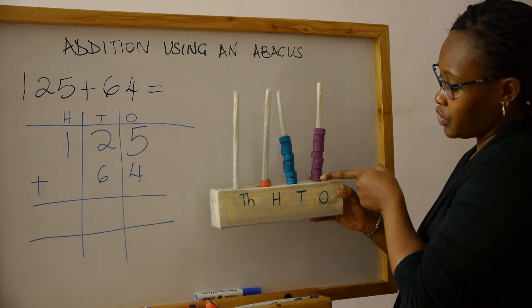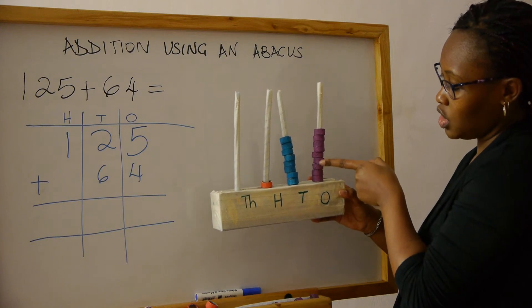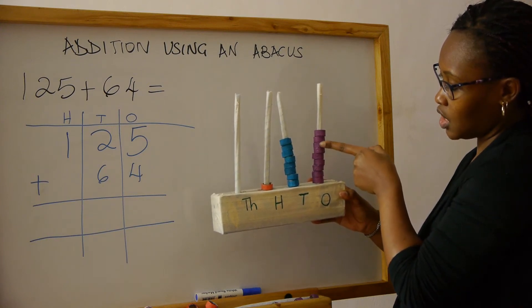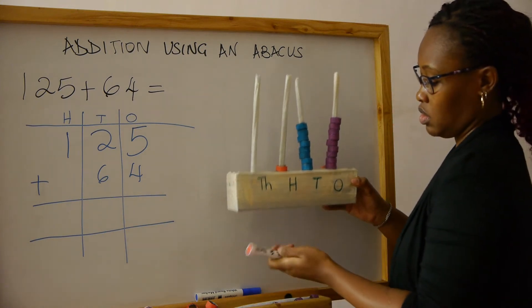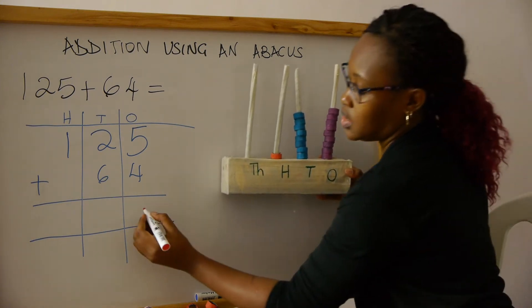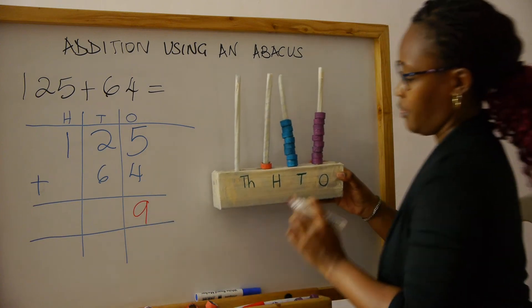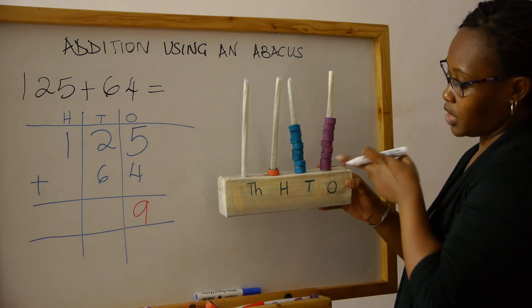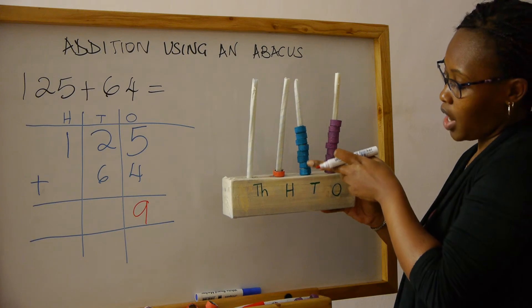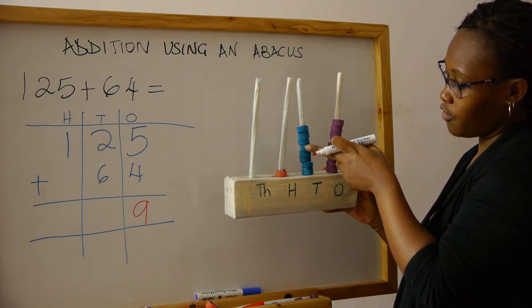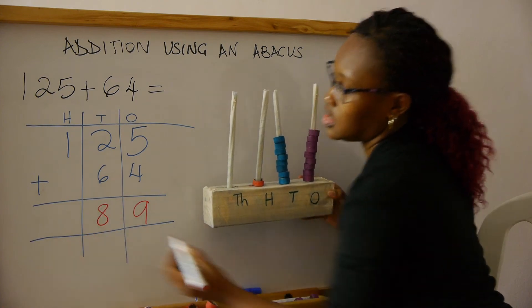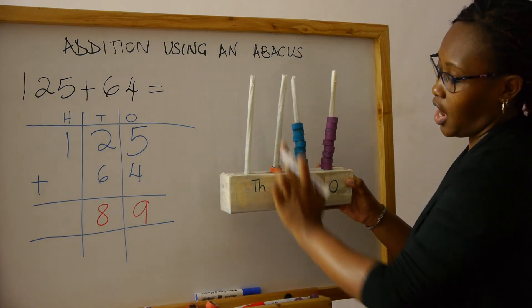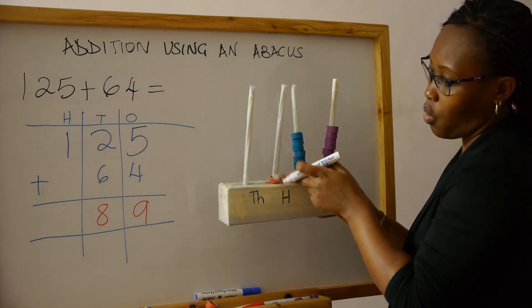So now we add them. We count all the beads in each column. That's nine in the ones column. Then we count the next column—that was ones, now we are counting tens—that's eight. And then in the hundreds column we have one.